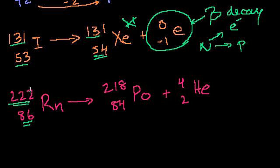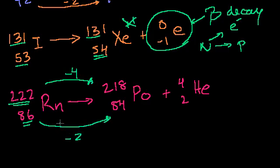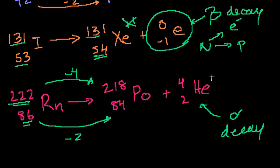Back to the problem: our atomic mass went down by 4, and our atomic number went down by 2. Once again, we must have released a helium particle — a helium nucleus — something with an atomic mass of 4 and an atomic number of 2. So this is alpha decay. We could write this as a helium nucleus with no electrons, and we could note it would briefly have a positive charge before it acquires electrons and becomes stable.